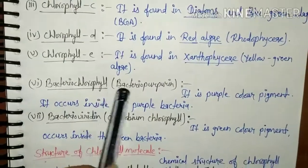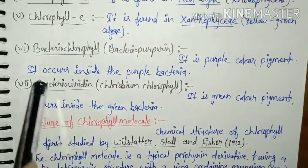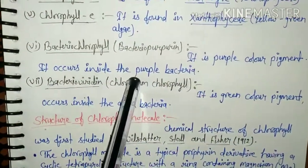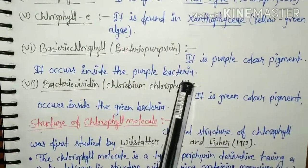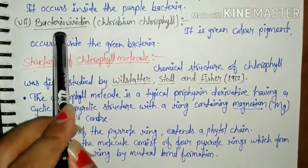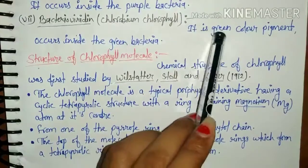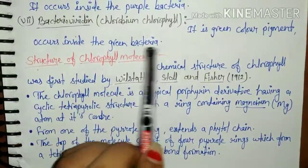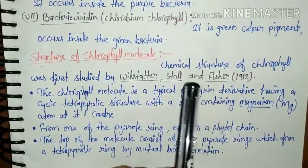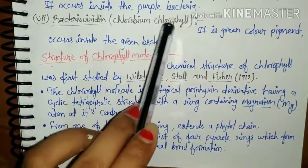Bacteriochlorophyll pigment is a purple color pigment and it occurs inside purple bacteria. The purple color of these bacteria is due to this pigment. The last type is Bacterioviridine, also called chlorobium chlorophyll. It is a green color pigment occurring inside green bacteria, and the green color of these bacteria is due to the presence of bacterioviridine. These are the types of chlorophyll present in higher plants, algae, and bacteria.